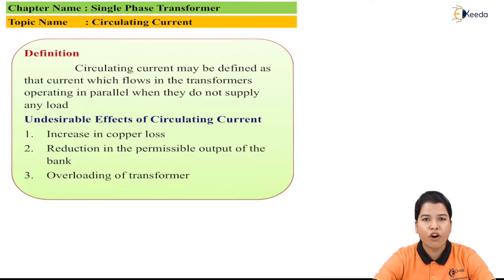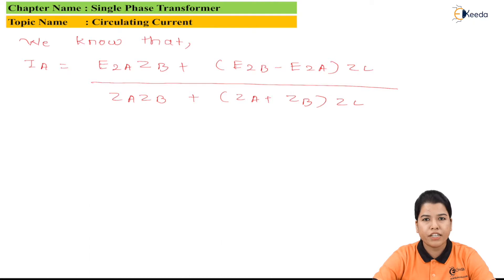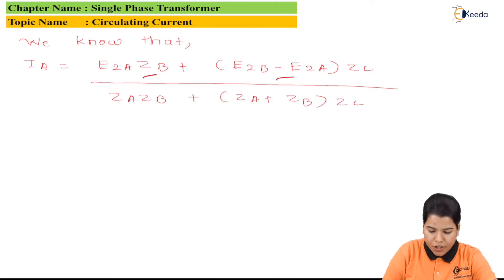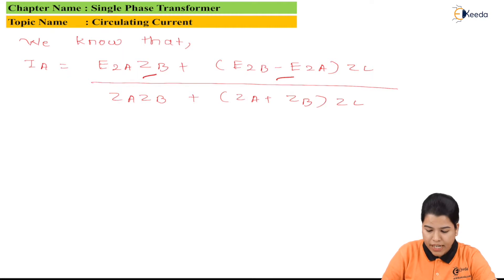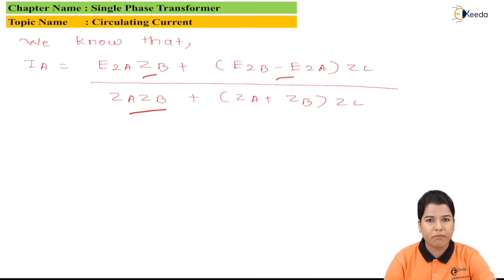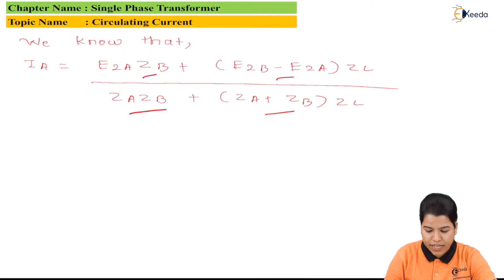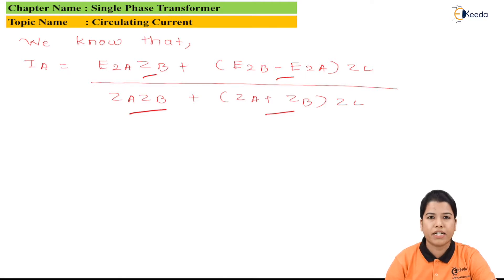The formula for the current of transformer A is given by: Ia = (E2A × ZB + (E2B − E2A) × ZL) divided by (ZA × ZB + (ZA + ZB) × ZL).